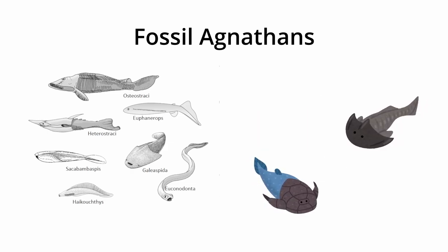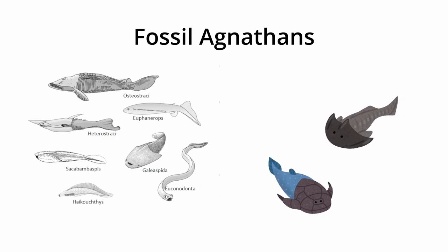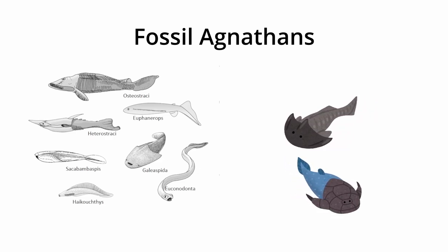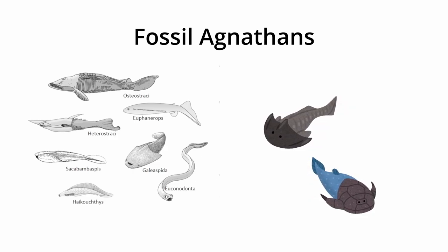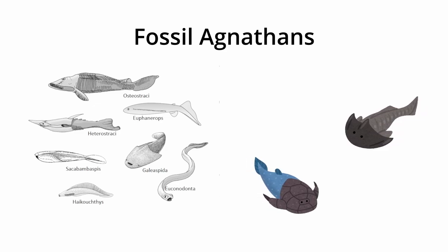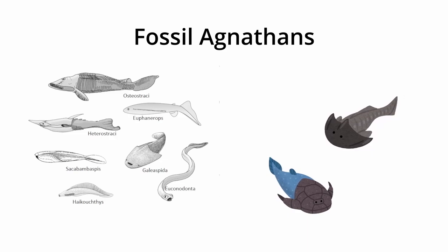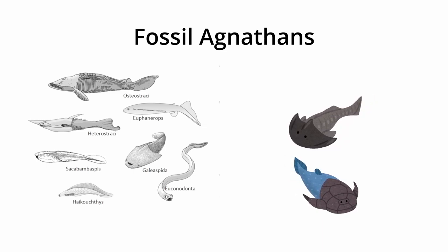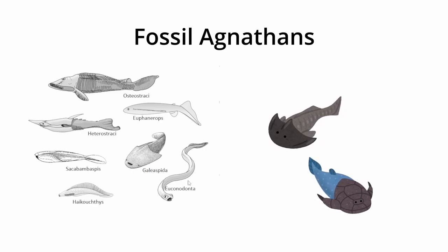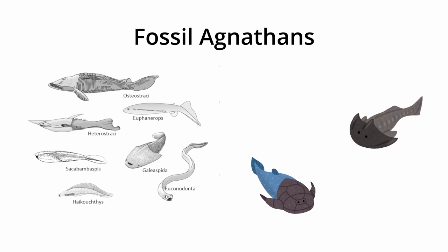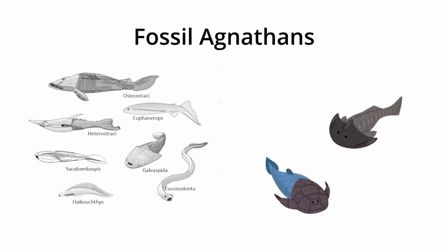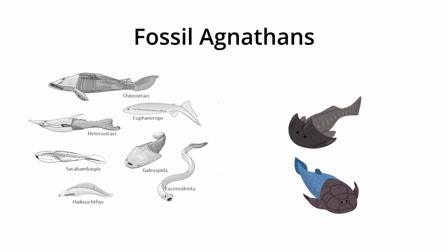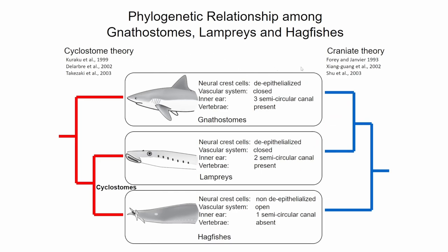There are a lot of fossil agnathans — not only eel-like shaped ones. The fossil data show that there were many armoured agnathans living in the Devonian sea and early seas. They were really rich in number of species, but now we can only see these two lineages.